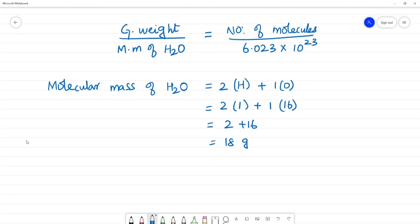To find number of molecules: given weight, 54 grams, by molecular mass of water, 18 grams, equals number of molecules by 6.023 into 10 to the power 23, that is Avogadro number. Clear?